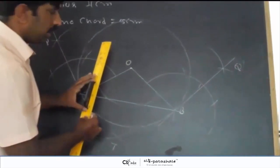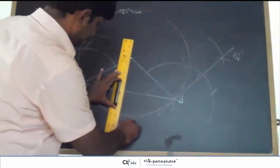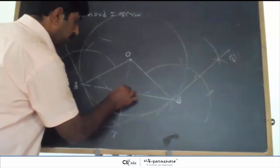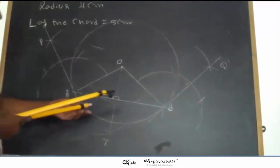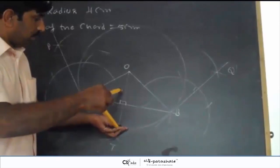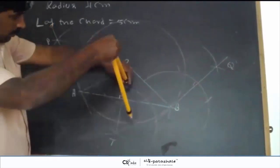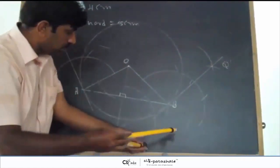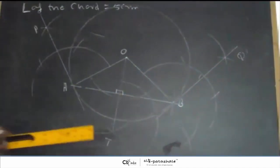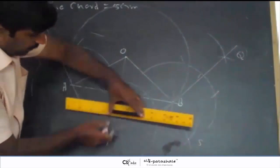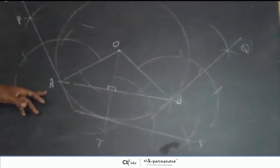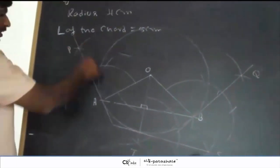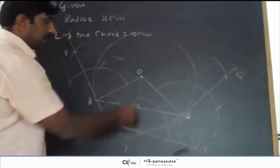Now mark point D and draw OD, where OD is perpendicular to AB. Again, construct the tangent at the end of the radius by drawing a semicircle, marking point S, and drawing TS. In total, there are 3 tangents: AB is a tangent; BQ and TS are the required tangents. AB and BQ are the tangents at the ends of the chord, and TS is the tangent at the end of the radius.